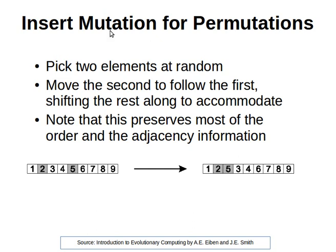For insert mutation the idea is we have one input, one parent. We pick two elements at random and we move the second element to follow the first — so to be right next to the first element.